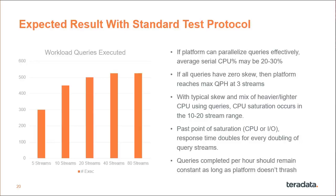What you expect to see is a graph showing that if a platform can parallelize queries effectively — with an average serial CPU in the 20–30% range — then if you have three of them running, you've pretty well used up all your CPU. In practice, with a typical mix of heavier and lighter queries, CPU saturation generally occurs in the 10 to 20 stream range. Once you get past the saturation point — either CPU or I/O — every time you double the number of streams, you would expect the response time to double, because you've only got a fixed amount of resources. However, queries completed per hour should remain constant.